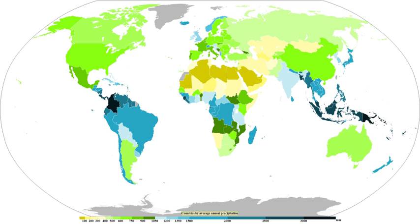Extratropical cyclones can bring cold and dangerous conditions with heavy rain and snow, with winds exceeding 119 km/h, sometimes referred to as windstorms in Europe. The band of precipitation associated with their warm front is often extensive, forced by weak upward vertical motion of air over the frontal boundary, which condenses as it cools and produces precipitation within an elongated band that is wide and stratiform, meaning falling out of nimbostratus clouds. When moist air tries to dislodge an Arctic air mass, overrunning snow can result within the poleward side of the elongated precipitation band.